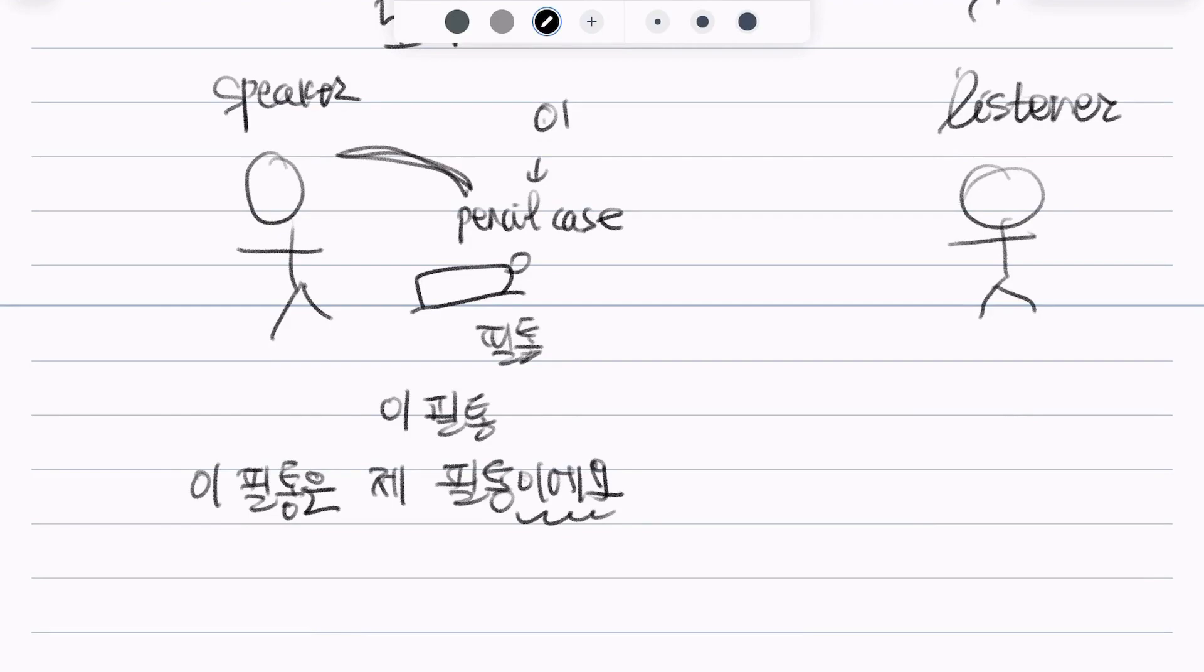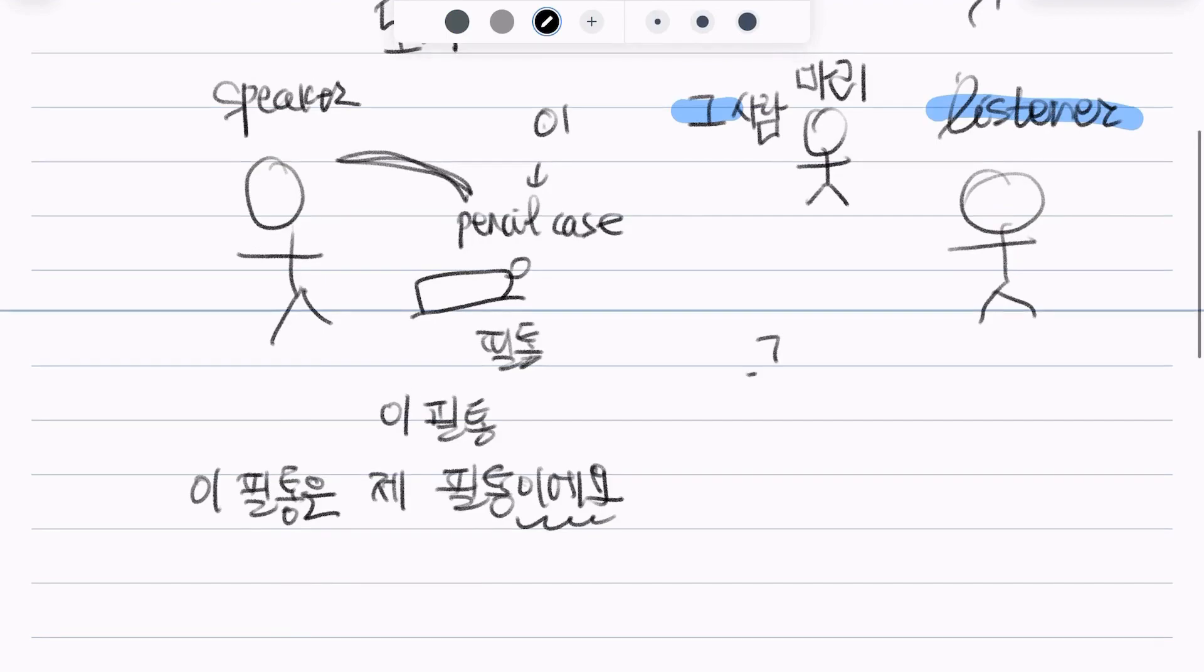If there's this person who's called 말이, we would say, 그 사람. Why? Because this 그 사람 is close to the listener. This person is close to the listener. So, we use 그. 그 사람. So, if I make a sentence, it would be, 그 사람은 말이 시예요.